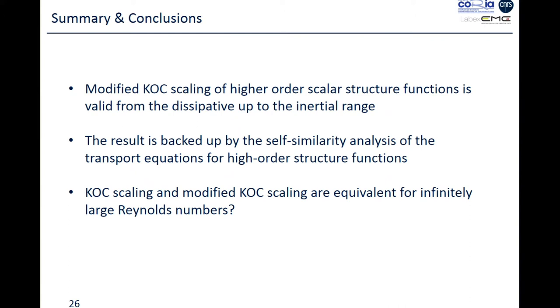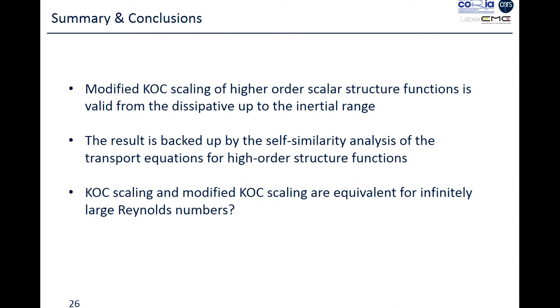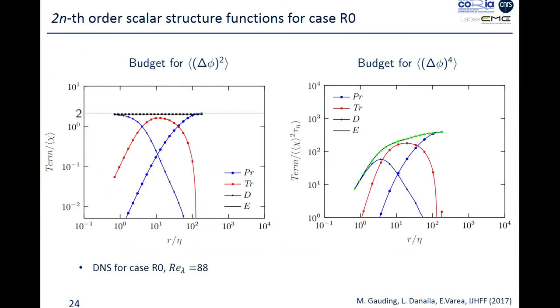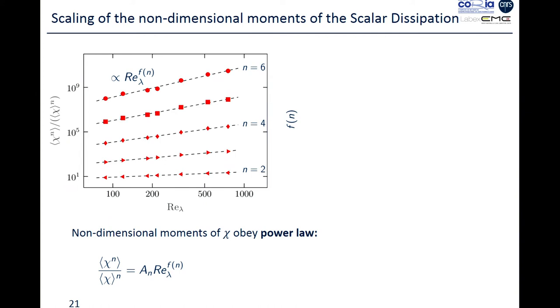These are our conclusions. We proposed a modified KOC scaling in which the higher-order moments of chi will come into play. The result is backed up by the self-similarity analysis that I do not develop here because of the limited time, but it is exactly the calculations I have developed this Monday that can be applied for the passive scalar here, and it just has to be developed. The question is now, are the two of them, the modified and the classical KOC scaling, are equivalent for infinitely large Reynolds numbers? Then it is, for now, an open question that probably further numerical simulations will help us to solve that.